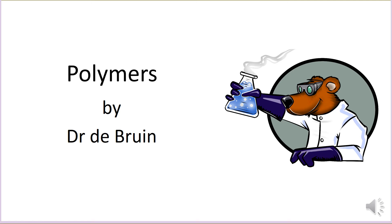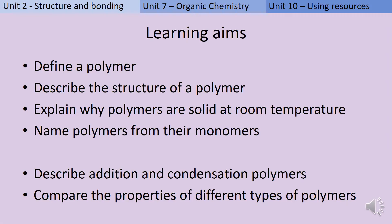This is a revision video about the GCSE chemistry topic of polymers. In the first part of this video we're going to define what we mean by a polymer, describe the structure of a polymer, and explain why polymers are solid at room temperature and name some polymers from their monomers.